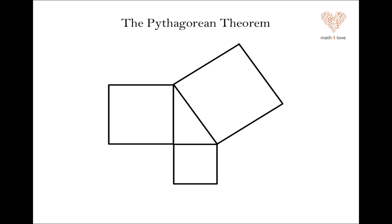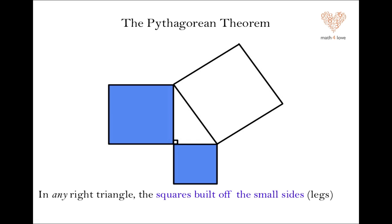And this is the Pythagorean theorem. This relationship between the squares, the areas of the squares of a right triangle. And what it says is, in any right triangle, so we have a right angle there. In any right triangle, the squares built off of the small sides, that's those ones, is equal, it has equal area to the square built off the large side.